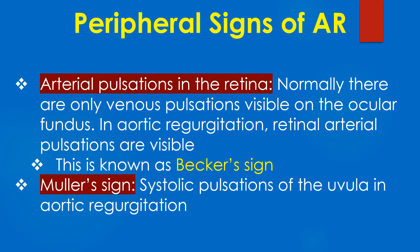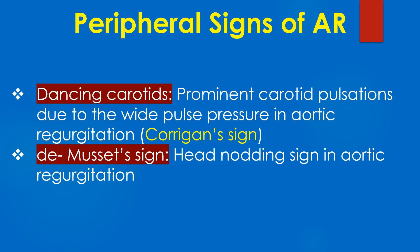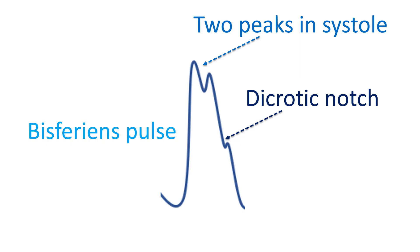Muller sign refers to systolic pulsations of the uvula in aortic regurgitation. Dancing carotids describes prominent carotid pulsations due to the wide pulse pressure in aortic regurgitation. Demuset sign is the head nodding sign in aortic regurgitation.